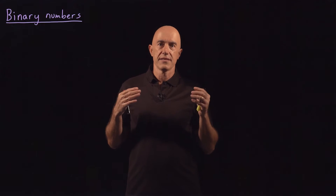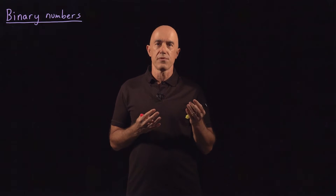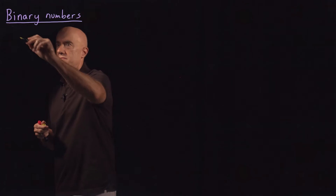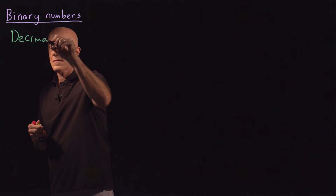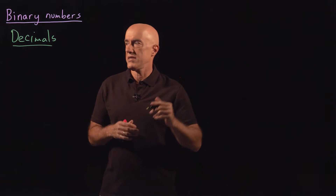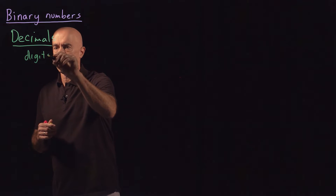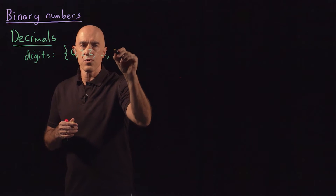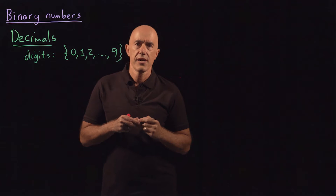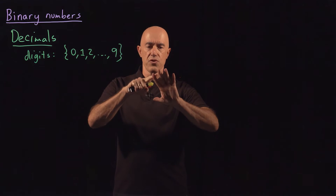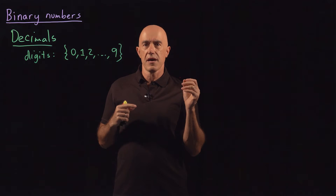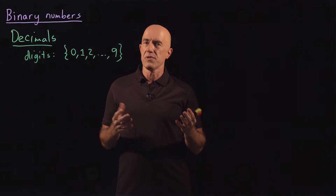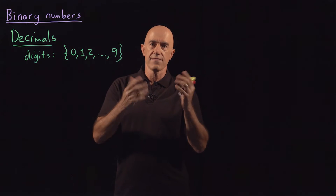Numbers are represented as binary numbers, but to understand what a binary number is, you should first understand what our usual number system is. That's called decimals. Decimals use digits — the digits in the decimal system are our usual 0, 1, 2, all the way to 9. The word 'digits' also means your fingers, and the base 10 number system became the main number system we use simply because we have 10 fingers to count.